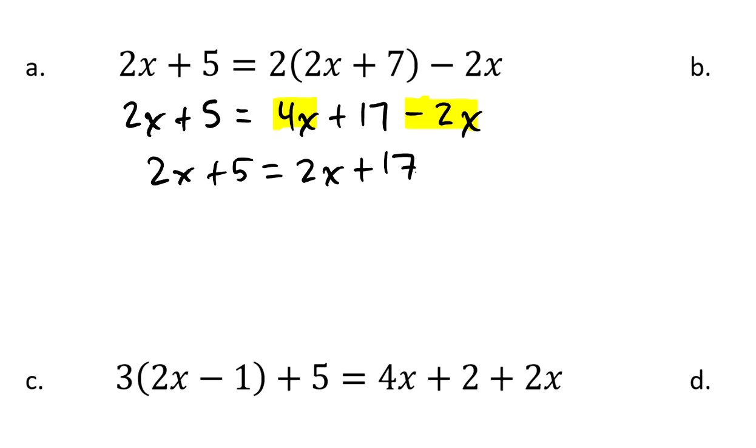So I can write this as 2x plus 5 equals 2x plus 17, which is problematic because you can see if I take away 2x from each side, what we're left here is this statement that 5 is the same thing as, this is not supposed to be 17. 2 times 7 is clearly 14. Thank you, Mr. Roberts.